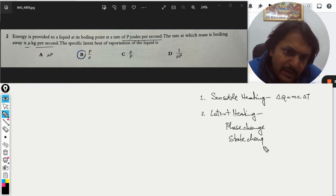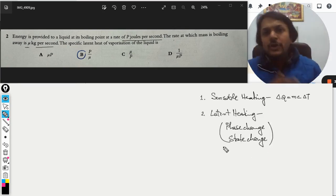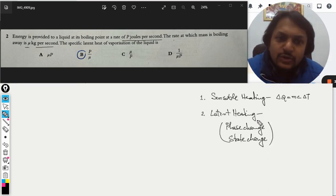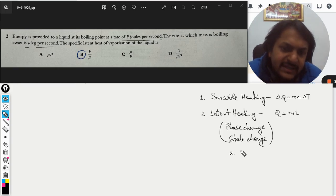Here the phase change is taking place or the state is changing, like from liquid to gas or from solid to liquid. This is called latent heat and the formula used here is Q equals mL, where Q is the heat that is given, m is the mass of the substance, and L is the latent heat.